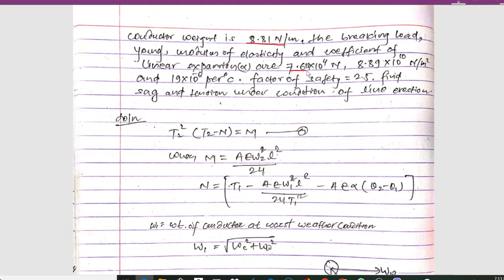The breaking load is given as 7.618 × 10⁴ Newton. The modulus of elasticity is 8.89 × 10¹⁰ Newton per meter square, the coefficient of linear expansion is 19 × 10⁻⁶ per degree Celsius, and the factor of safety is 2.5. We need to find the sag and tension under the conditions of line erection.